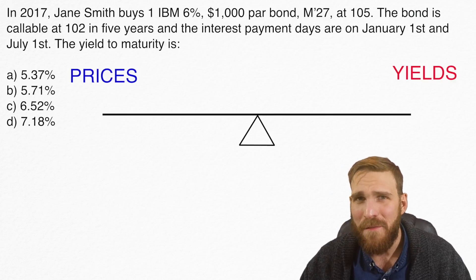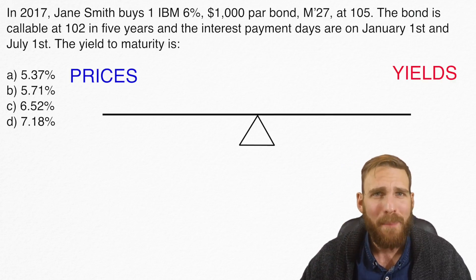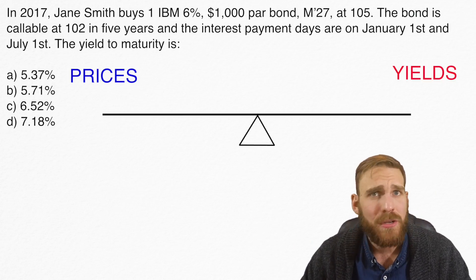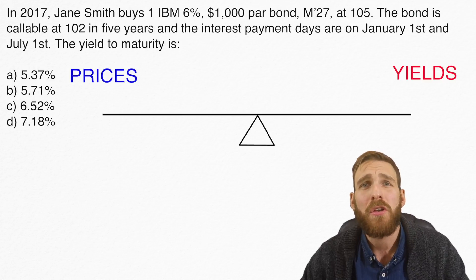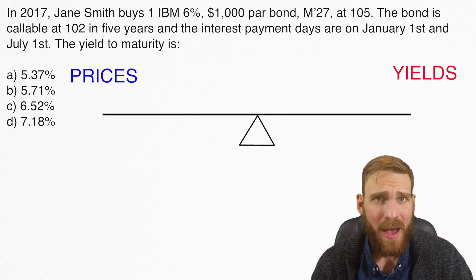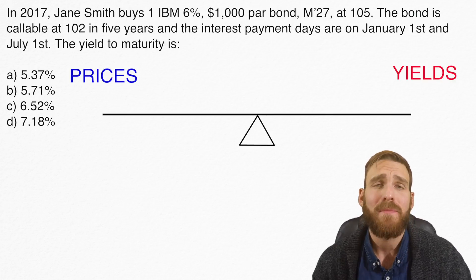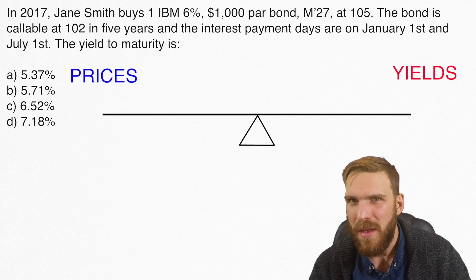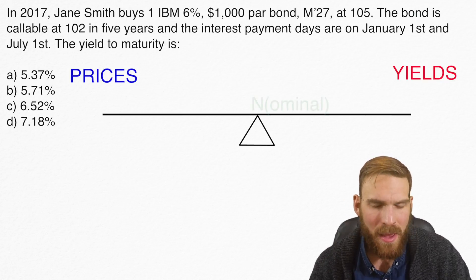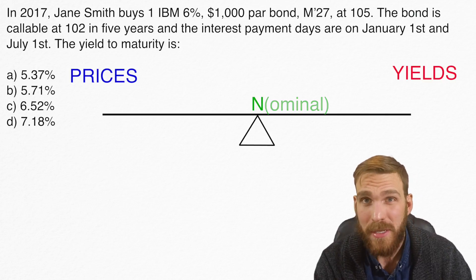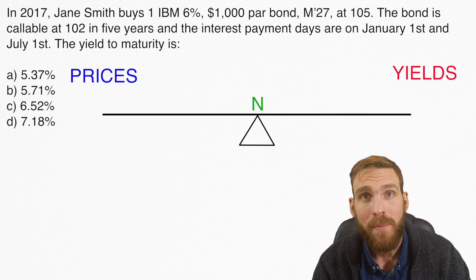The bond seesaw is a visual representation of what happens to prices of bonds when interest rates go up or down, and what that means for your yield to maturity when you buy a bond at a certain price. On the left-hand side of the bond seesaw, we've got prices — those are prices of bonds trading in the secondary market. The nominal yield is in the middle of the seesaw, and remember, that doesn't change for the life of the bond.